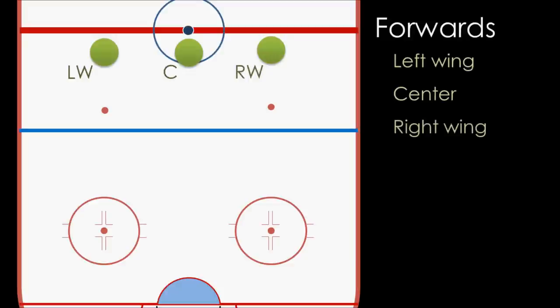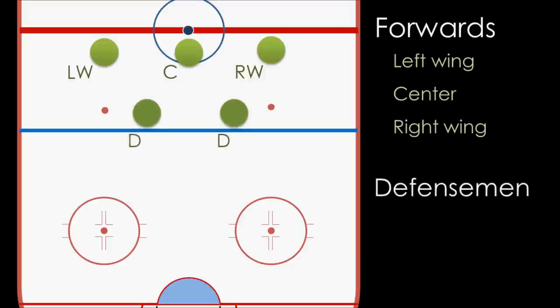Those positions have nothing to do with politics — thank goodness. The other two skaters will be defensemen, who help the goalie stop the other team from shooting the puck into their net. And then of course we have the goalie in the net. These players can jump onto and off of the bench and be replaced by another teammate at any time during the game.